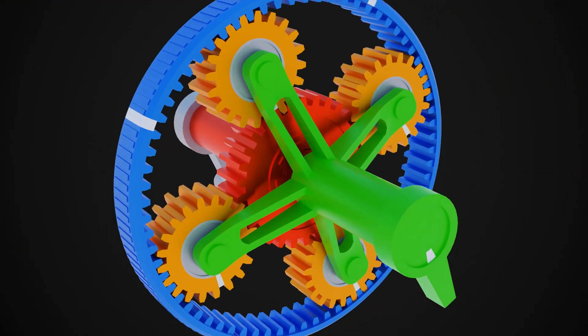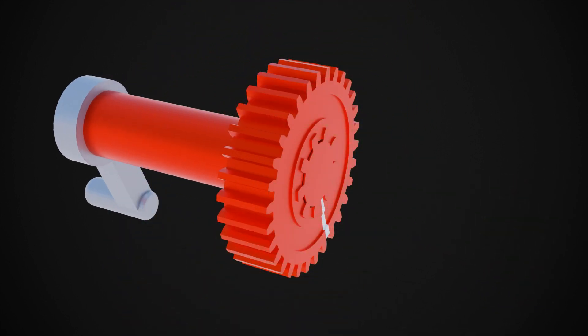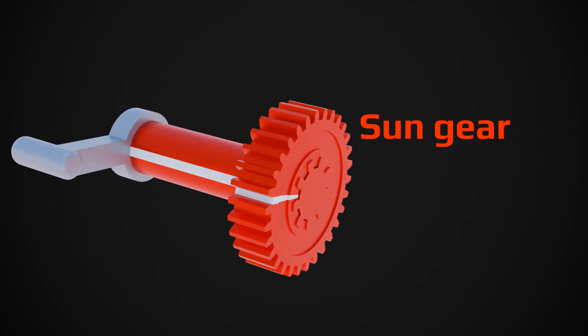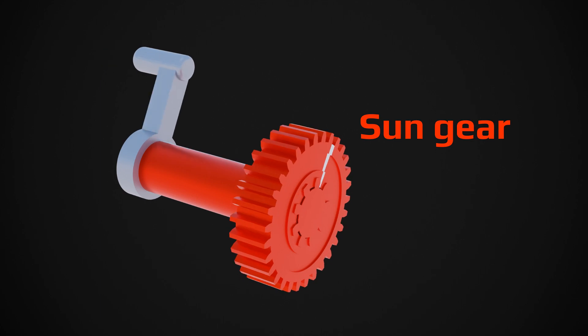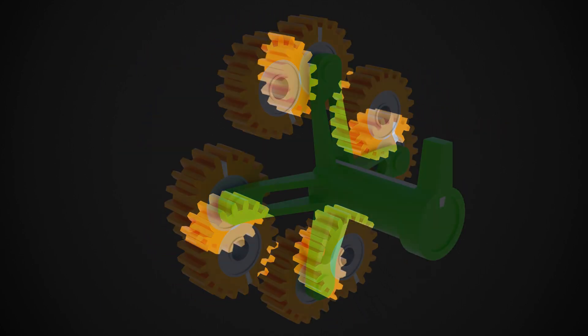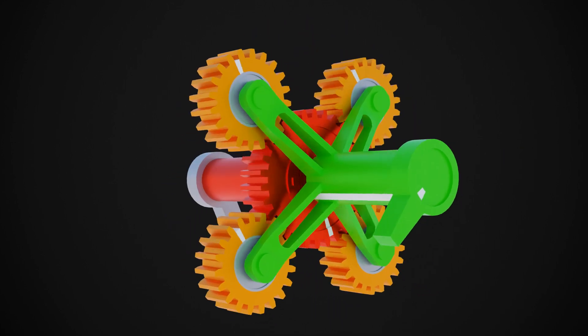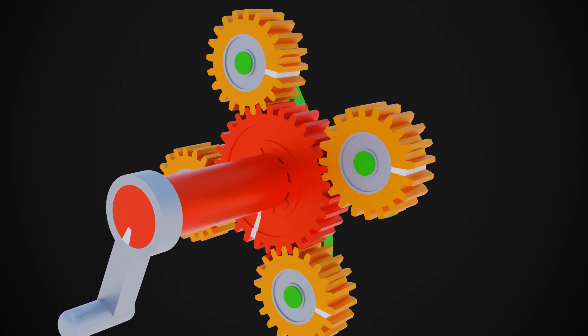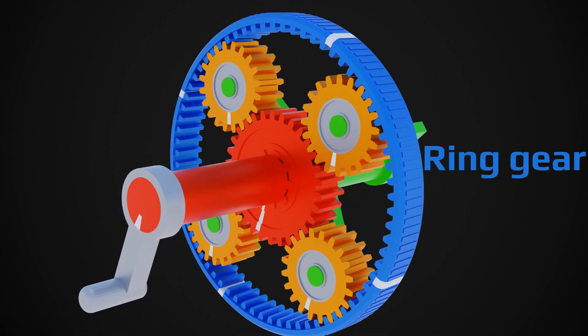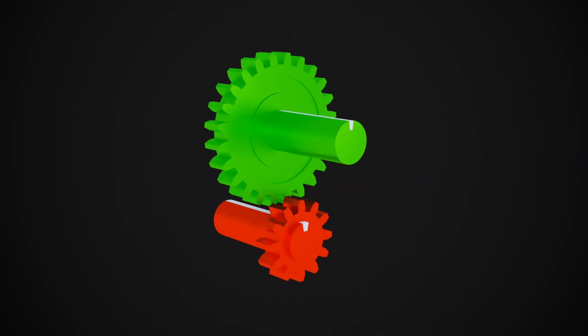A basic planetary gearset has four major components. At center is the sun gear connected with the input shaft. These four gears are connected with the carrier plate. These are called planet gears because these gears can orbit around the sun gear. This is a ring gear. Ring gear has teeth on the inner side.